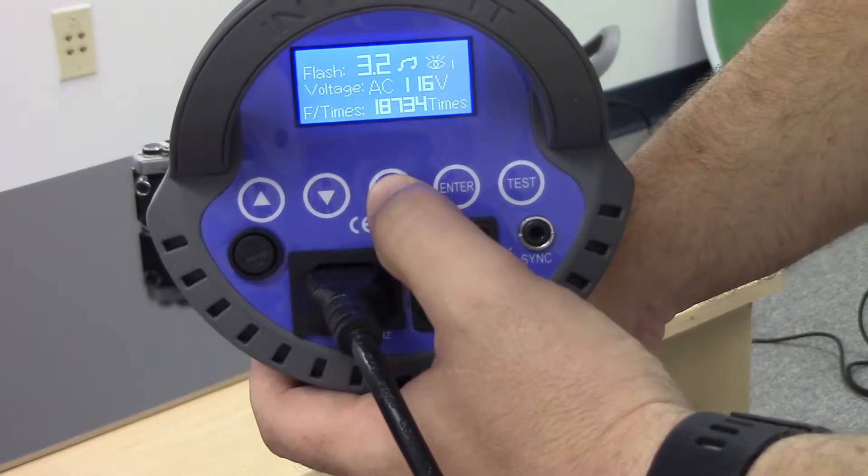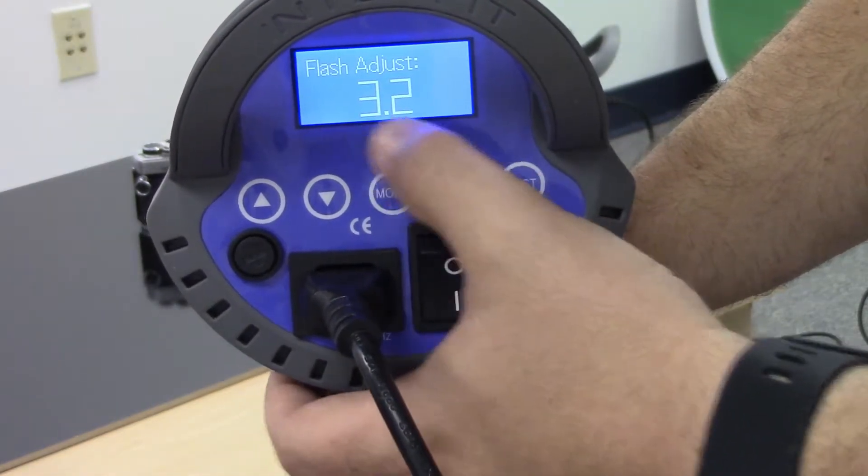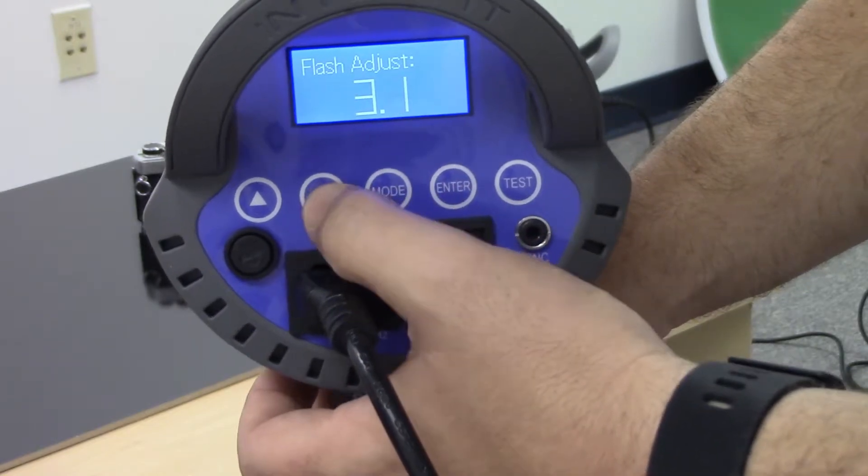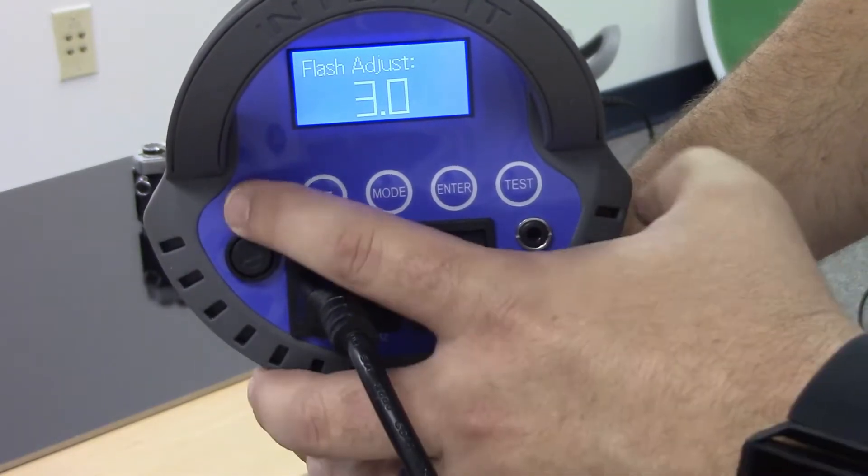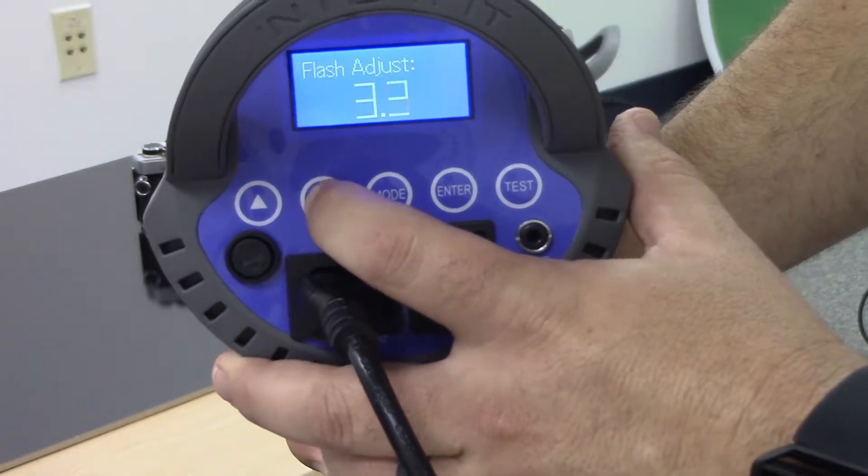Now when we go to make an adjustment to any of these, we go to the screen that we want to make an adjustment to and then we can use these arrow keys to turn the power of the flash up or turn the power of the flash down.